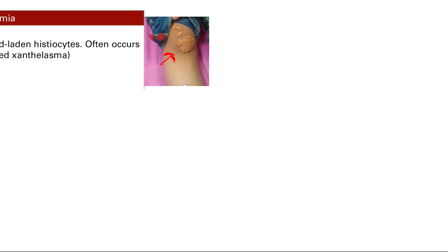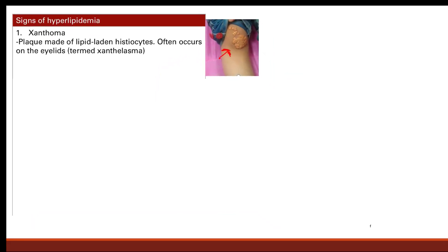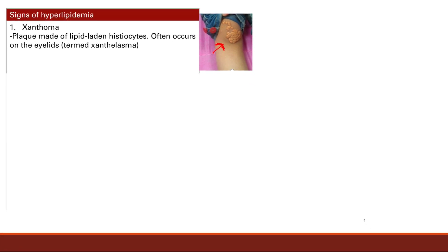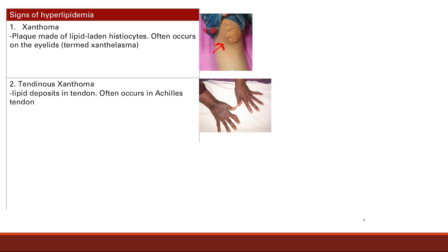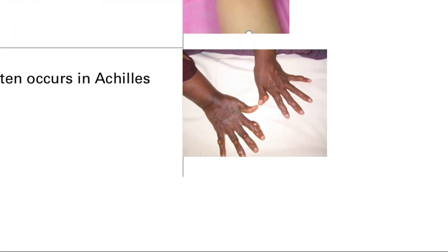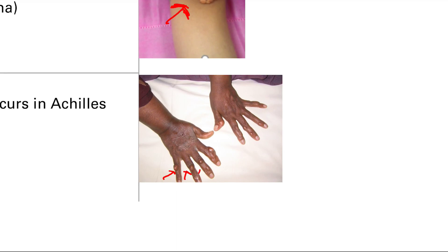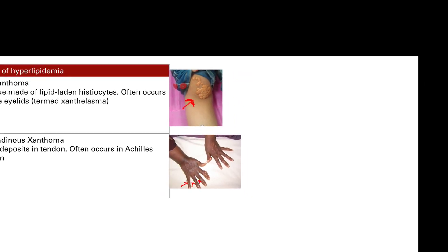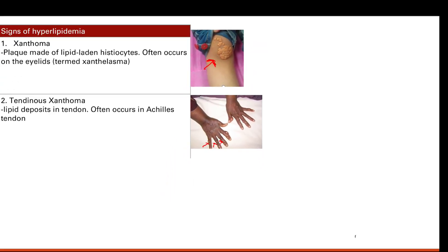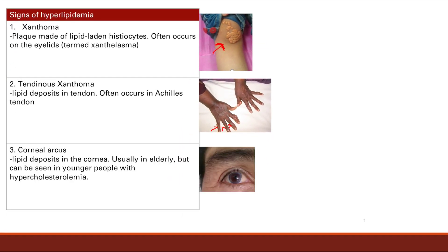Next is tendinous xanthoma — from the name, it's lipid deposits in the tendon. Very commonly this occurs in the Achilles tendon, though it can also appear in the tendons of the fingers, where lipid deposits cause raised bumps. The last one is corneal arcus, when lipid deposits go into the corneas, presenting as a blue ring around the iris — that's very classic for corneal arcus.